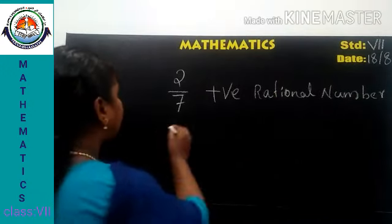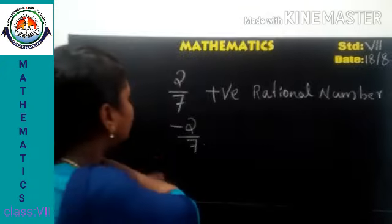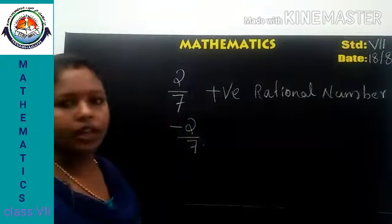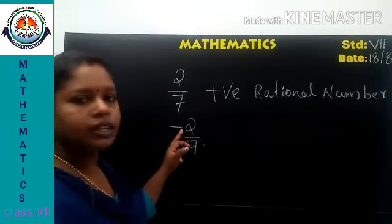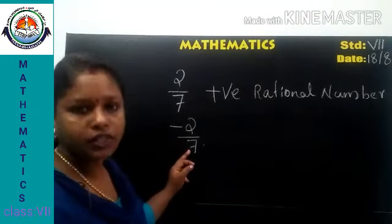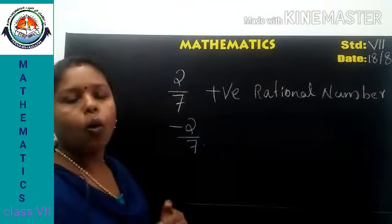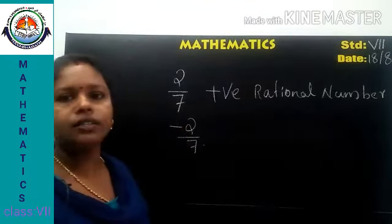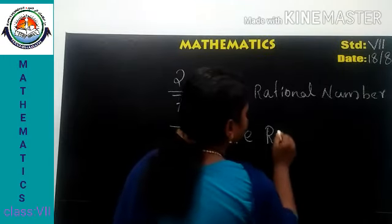We can take negative 2 by 7. Here the denominator is positive and the numerator is negative. The numerator is negative 2 and denominator is positive 7. They are of opposite sign — one is positive and another is negative — therefore it is a negative rational number.